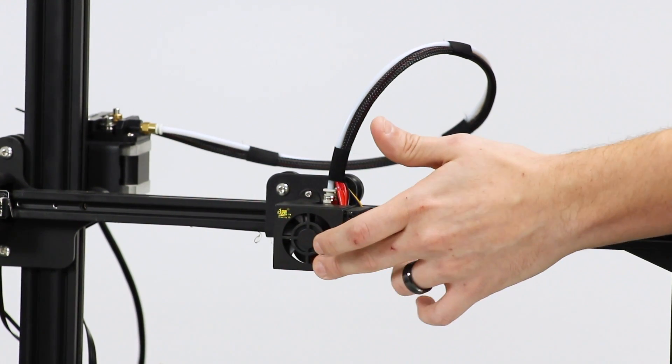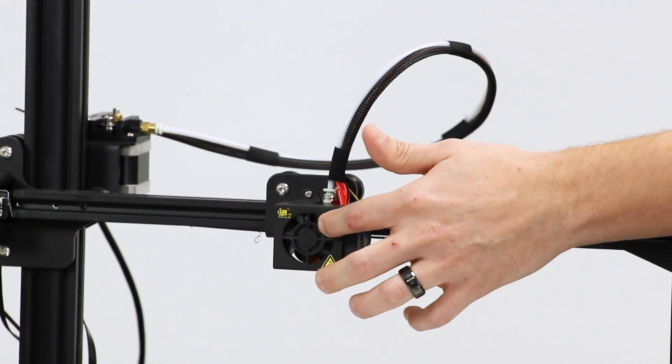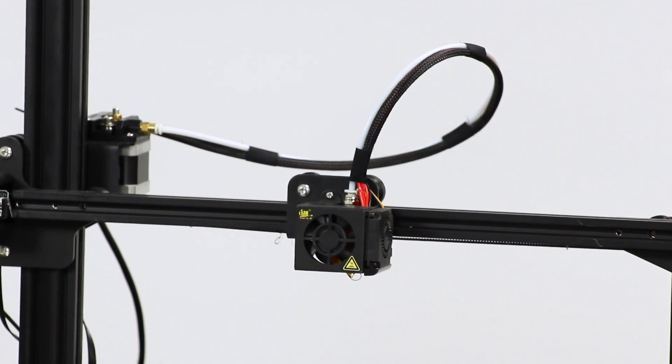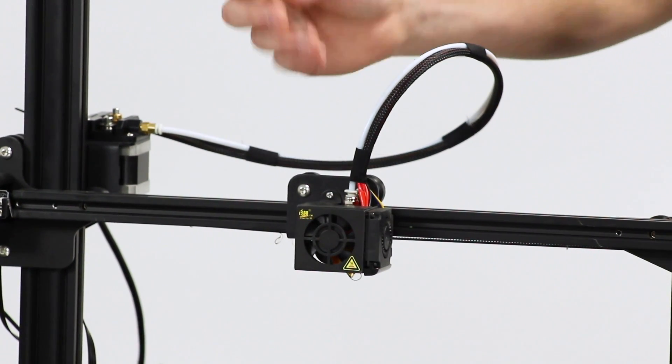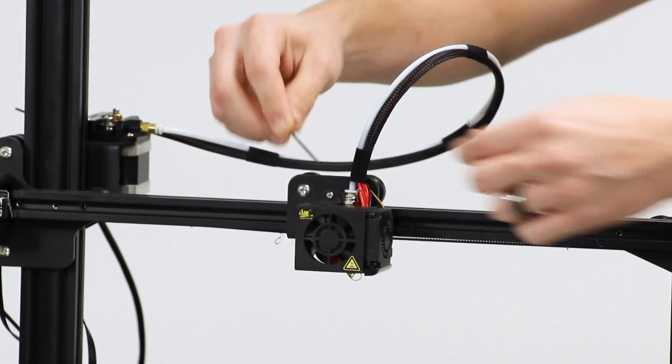It uses a 40-10 fan for the hotend cooling fan. That cools the aluminum heat sink to keep the cool side of the hotend cold. Let's take this cover off and just take a look at that hotend assembly.